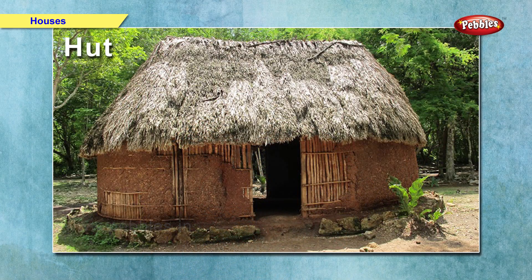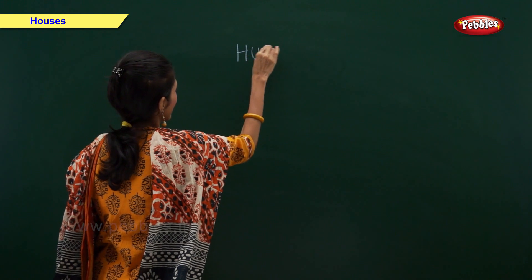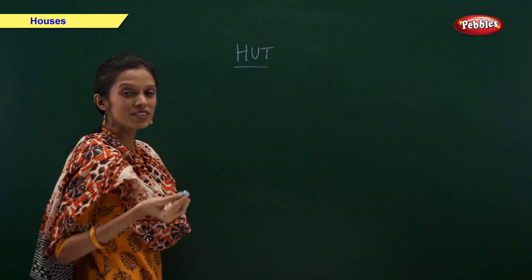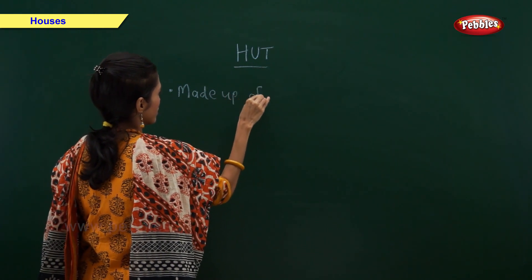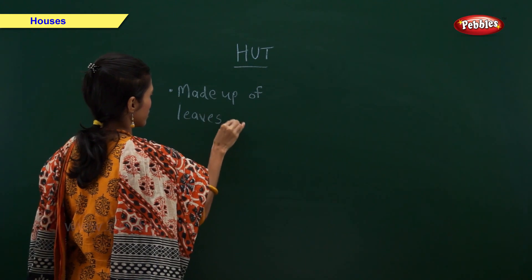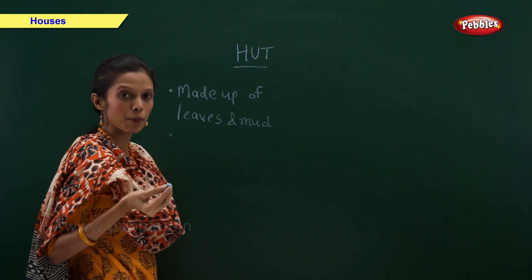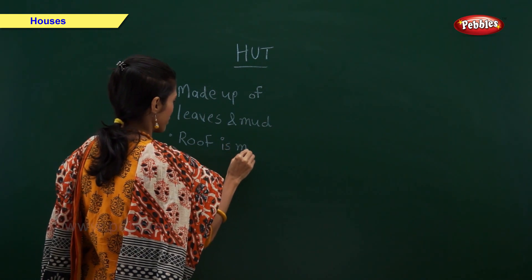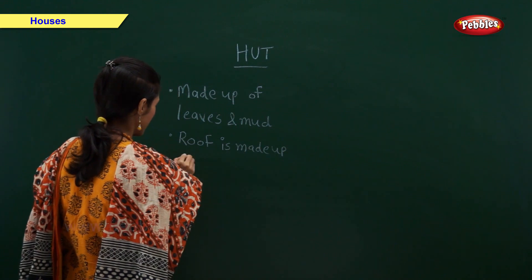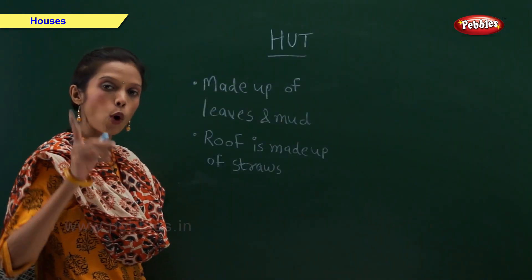Now let us take a look at each type of house in detail. A hut is made up of leaves and mud. Its roof is made up of straw. A hut may have only one room.